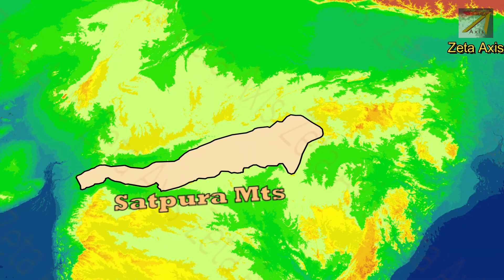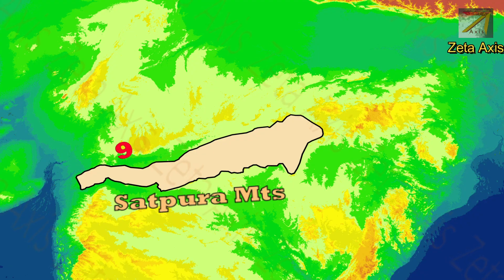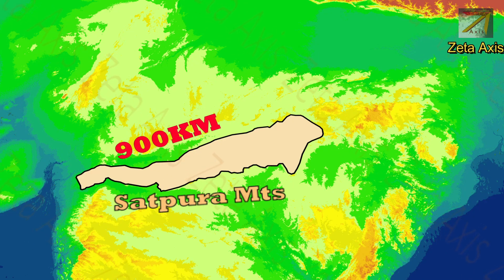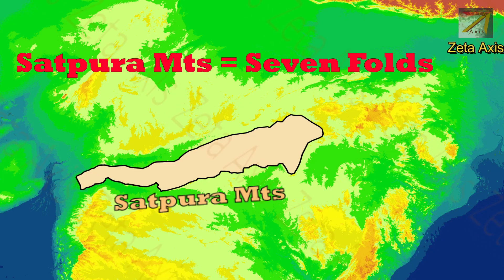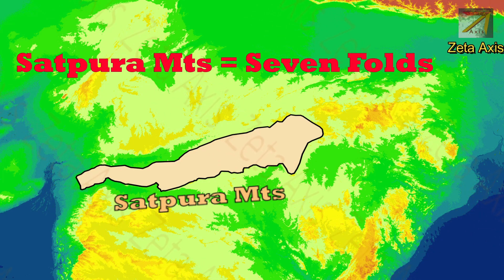The Satpura mountain ranges are hill ranges which run for 900 km from east to west in central India. The name Satpura means seven folds or seven mountains, thus implying that Satpura hills are formed of seven sub-ranges.